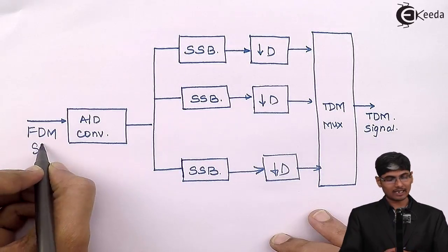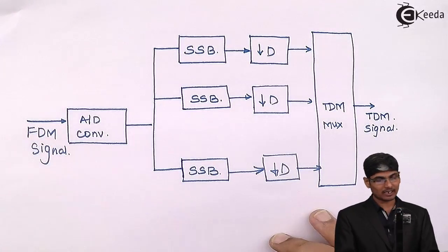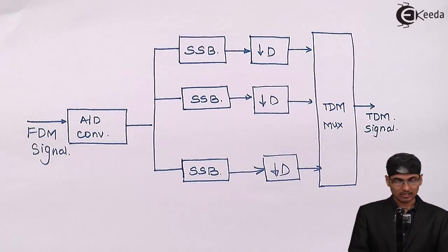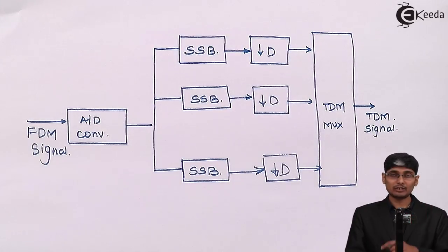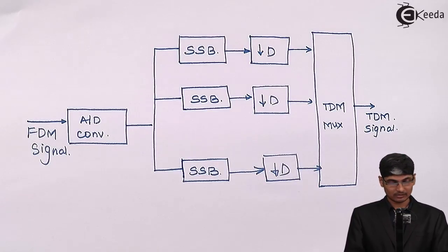We will have an input over here as an FDM signal. FDM signal will have various signals which are at different carriers. Then the first step I need to perform is convert this analog signal to digital signal. So I will be using an A to D converter.